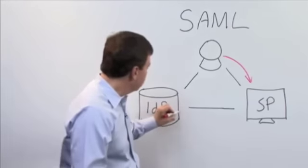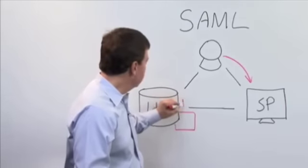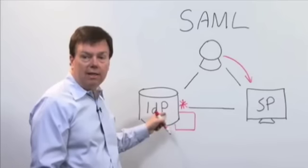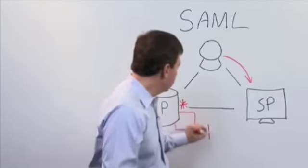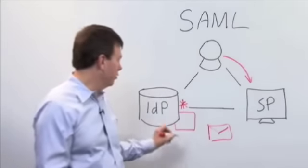When that happens, federated identity software running at the IDP kicks into action, and it validates that user's identity and that the user is correctly authenticated. It then constructs a specially formatted message containing information about that user.